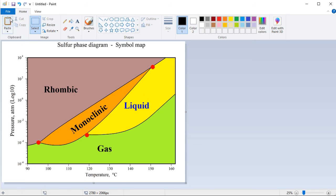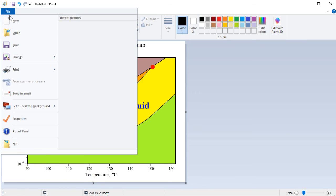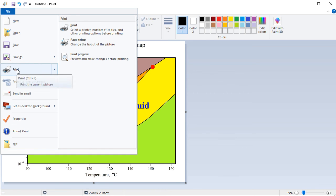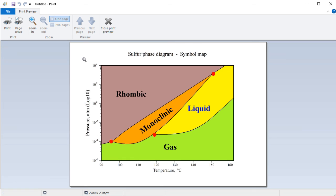To preview the image before printing it, click on the file menu, select print, and print preview. To print the image, select print.